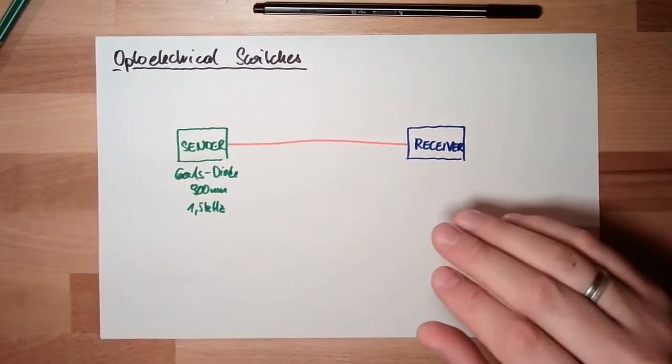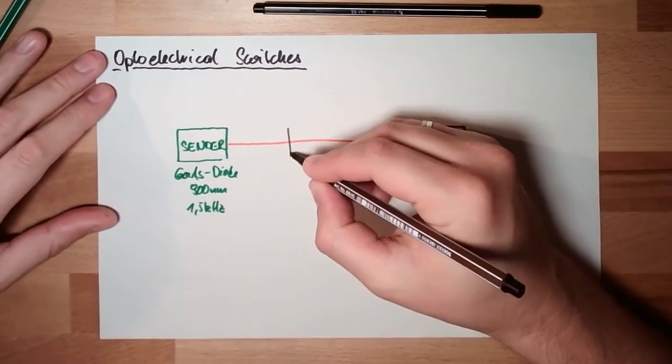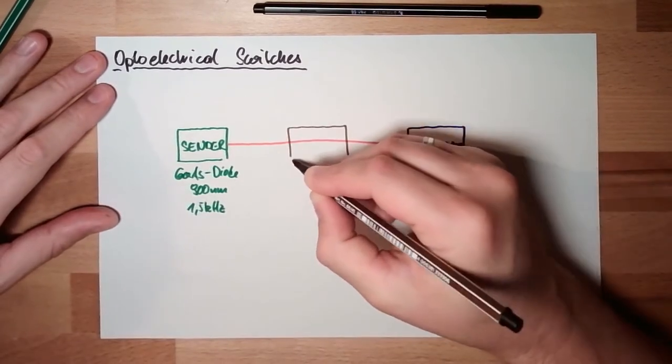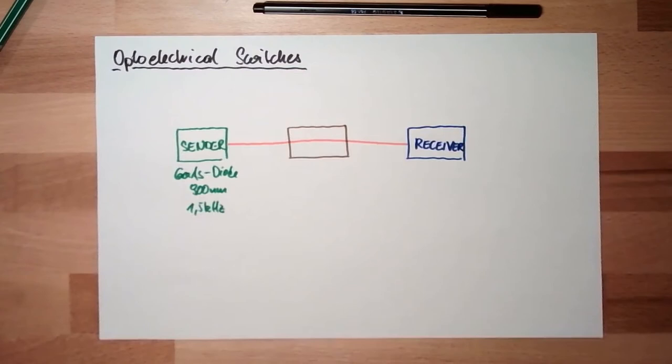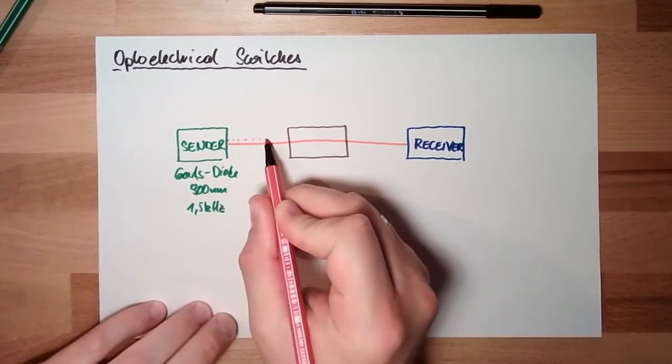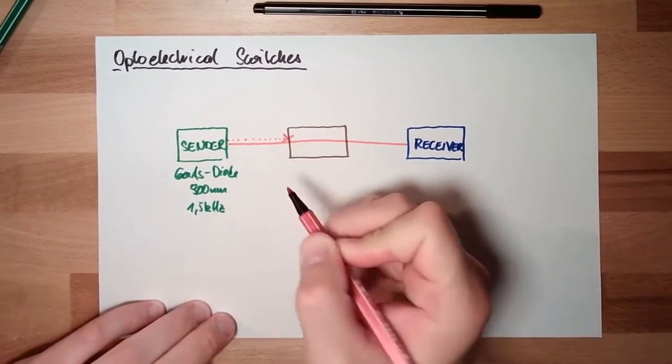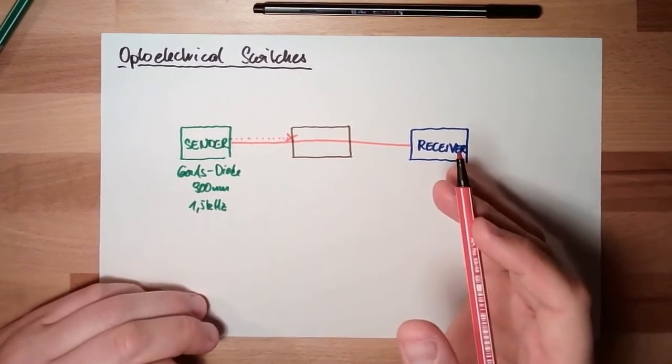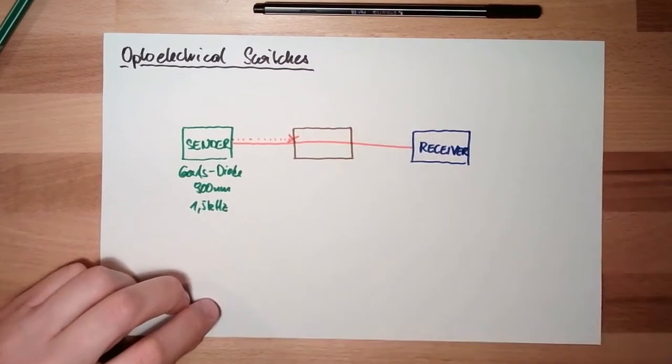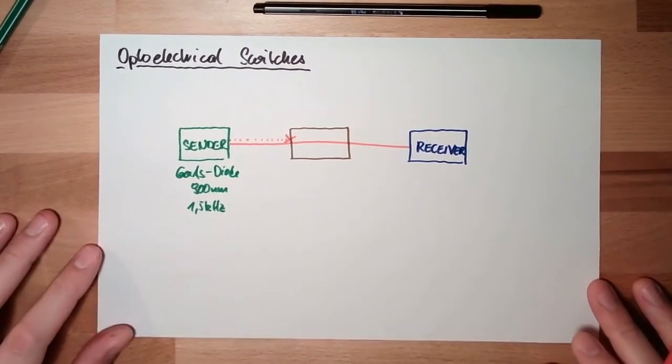If something comes between, then the light of the sender is blocked here. And the receiver does not see the light of the sender. And we know something must be in between.